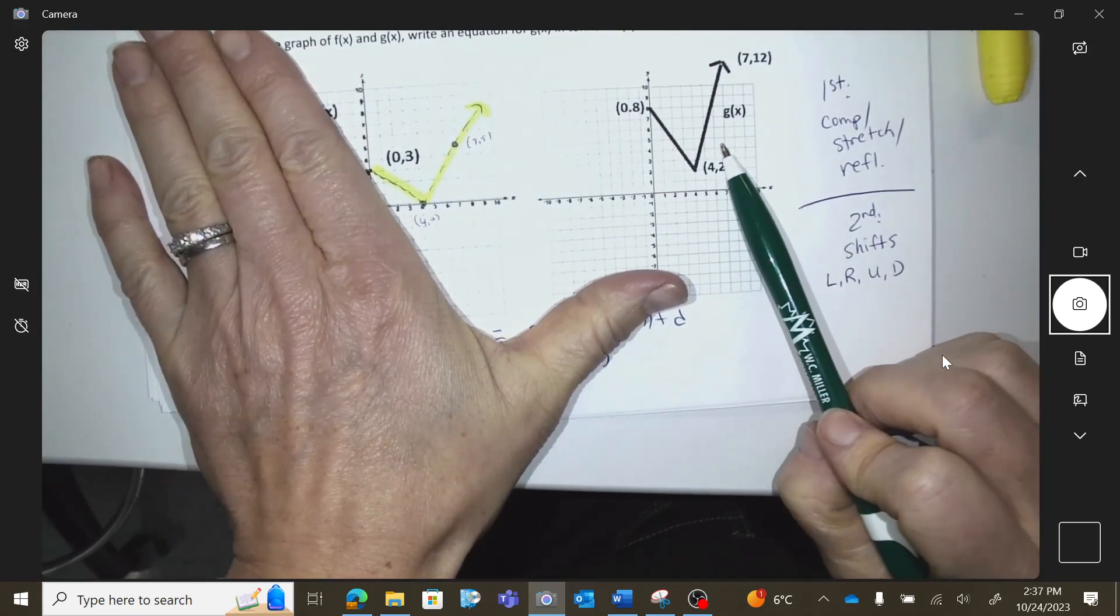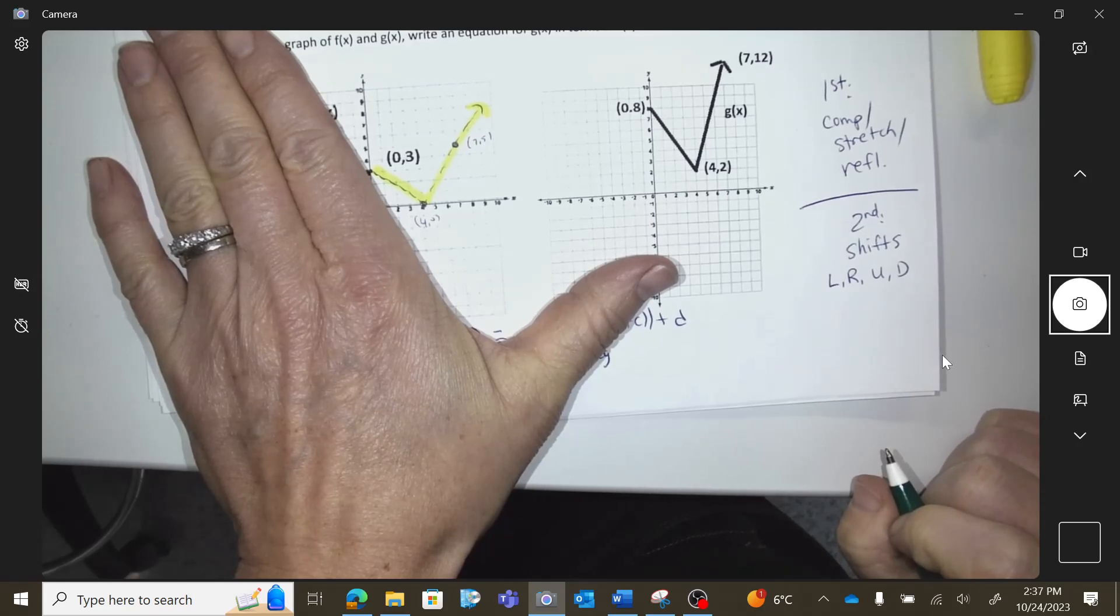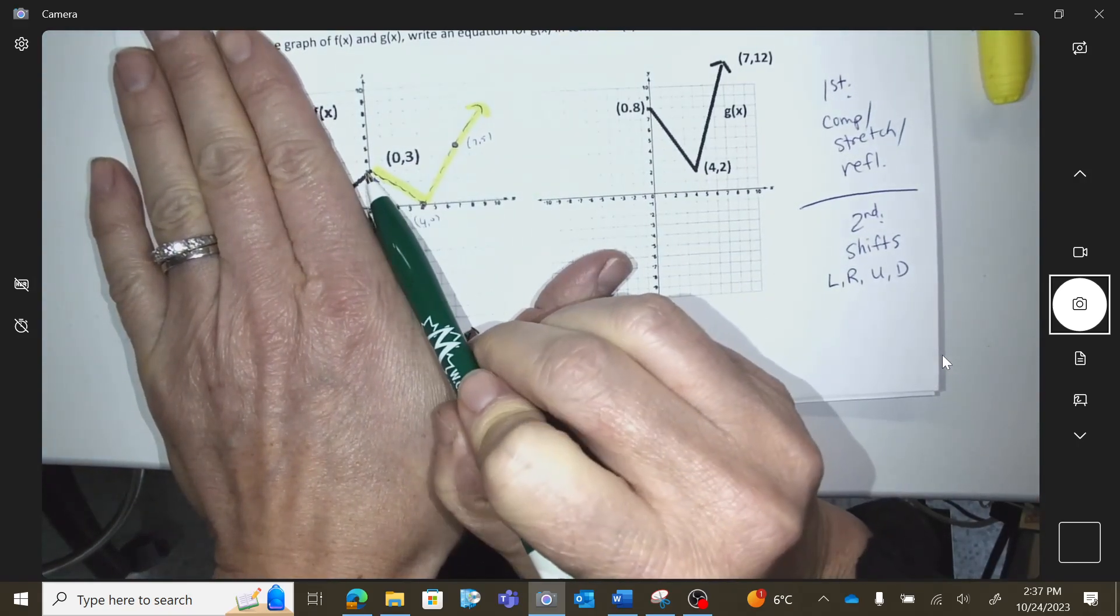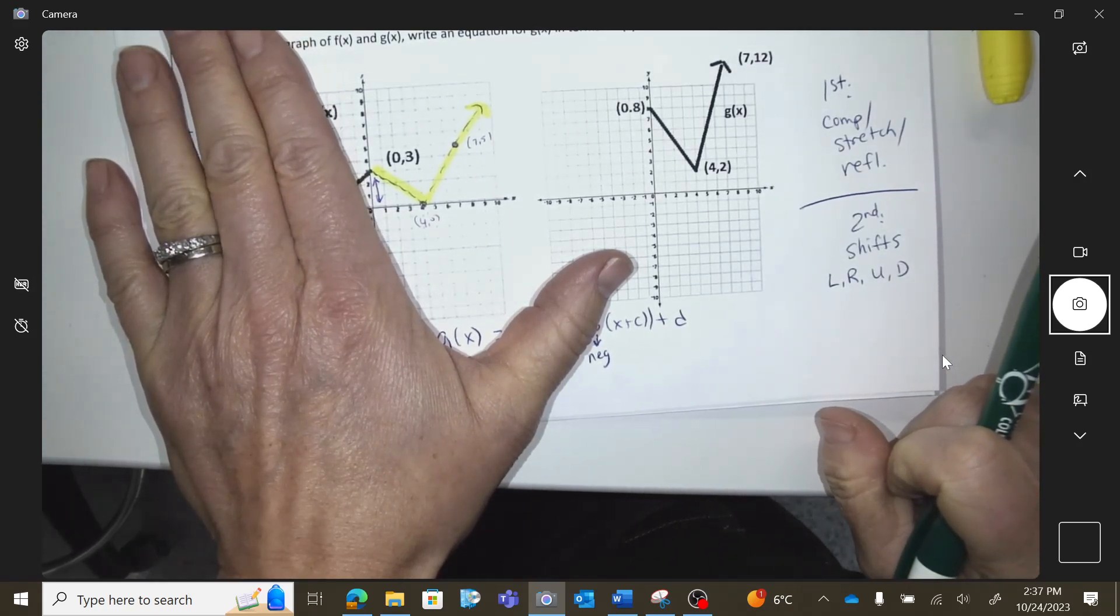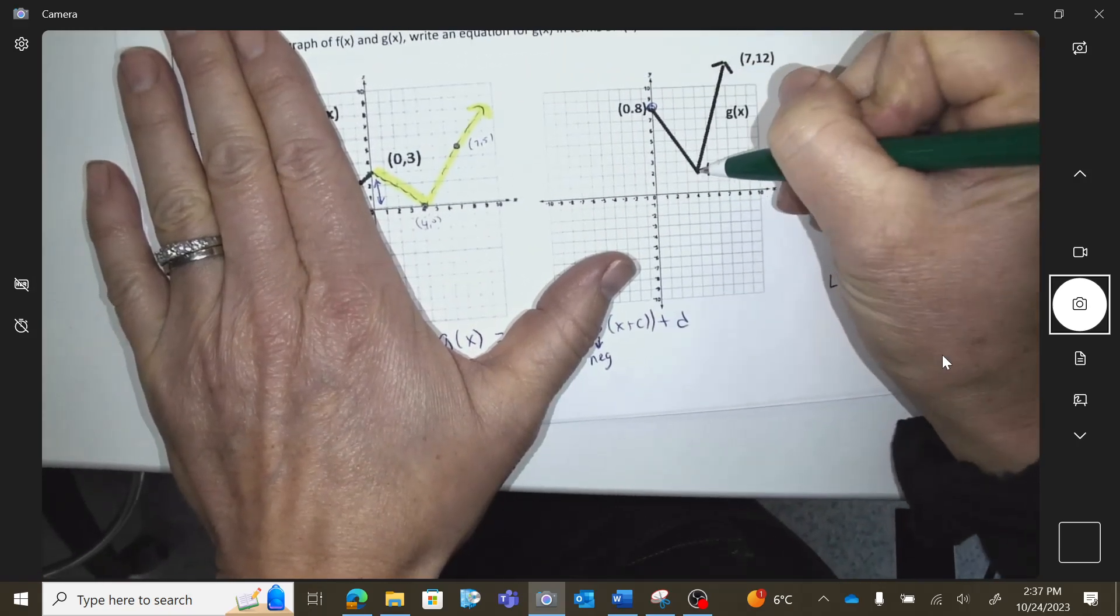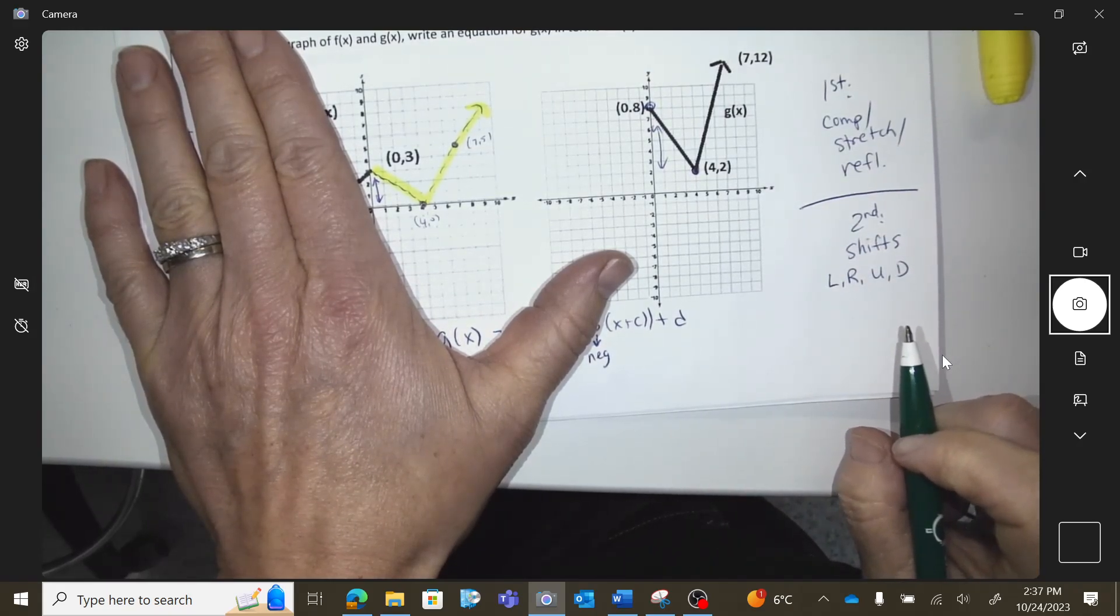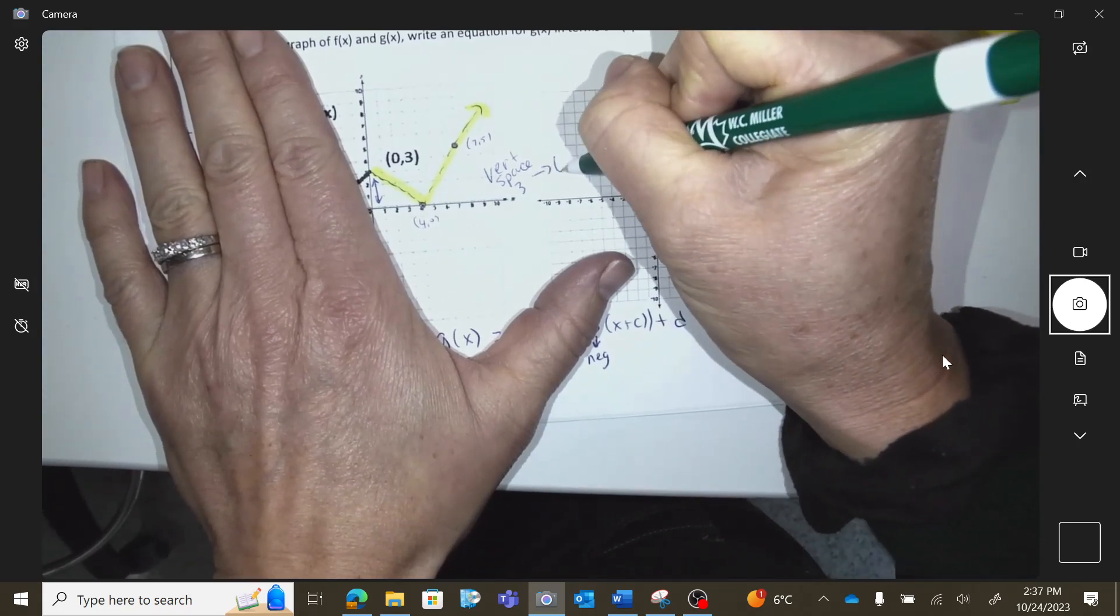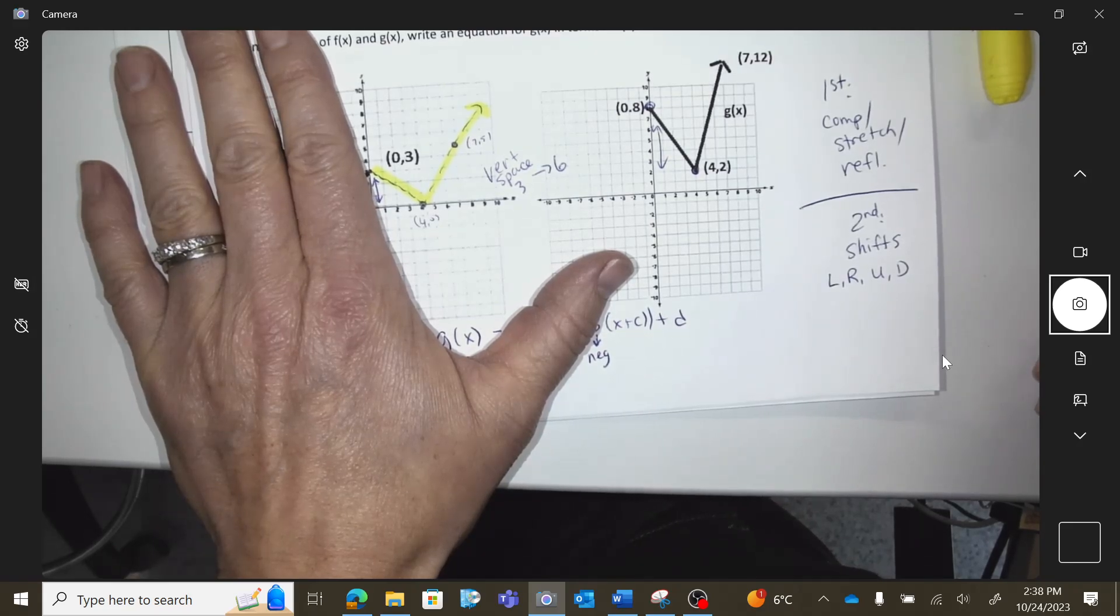So look at my yellow one and look at this. Did I do any compressions or stretches? Stretch, okay, what are you noticing about stretching? Let's look at the space. Let's take this point and this point, how much vertical space is between them? Three. Now look at that point and that point, how much vertical space is between them now? Six.